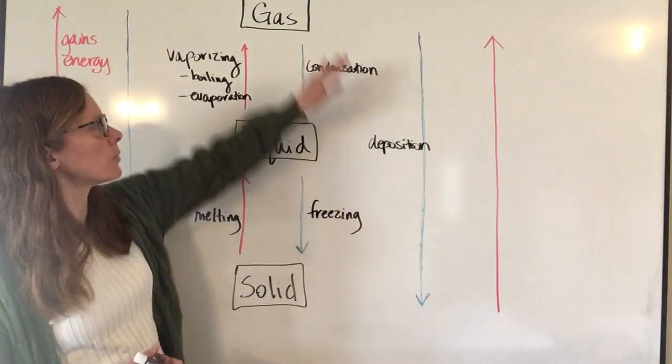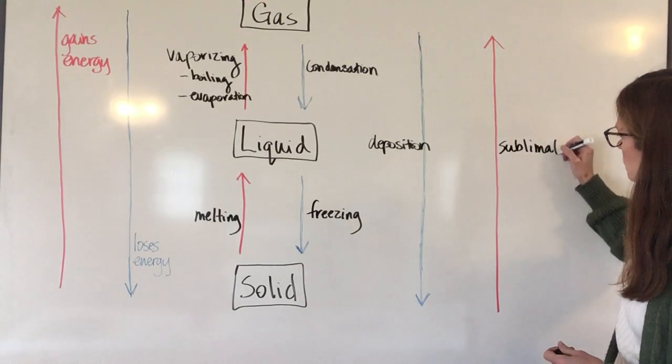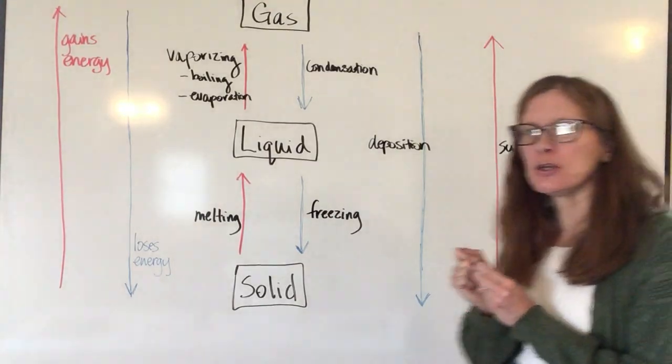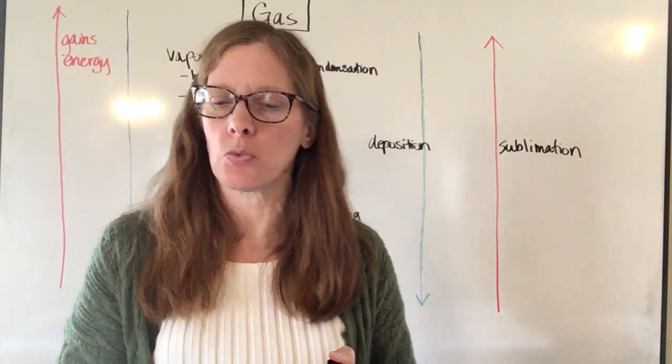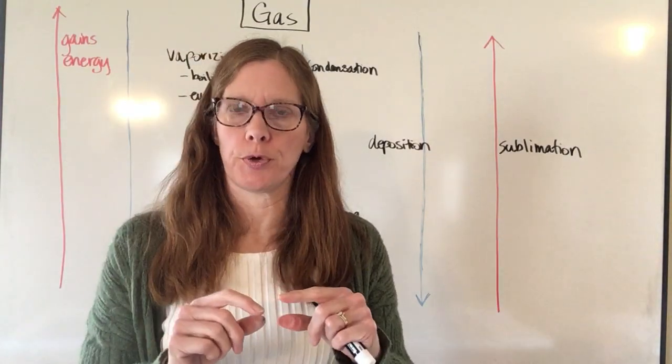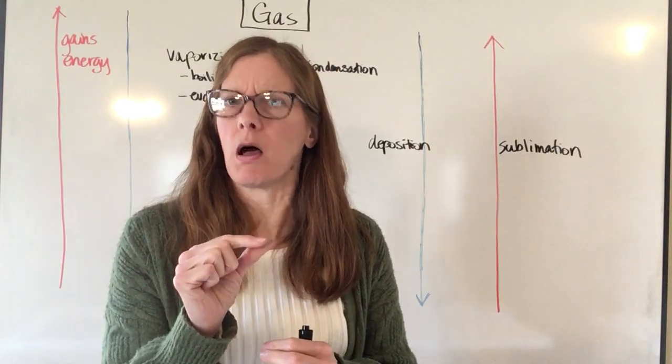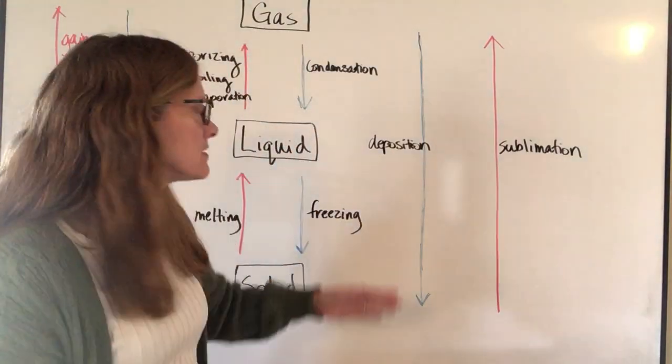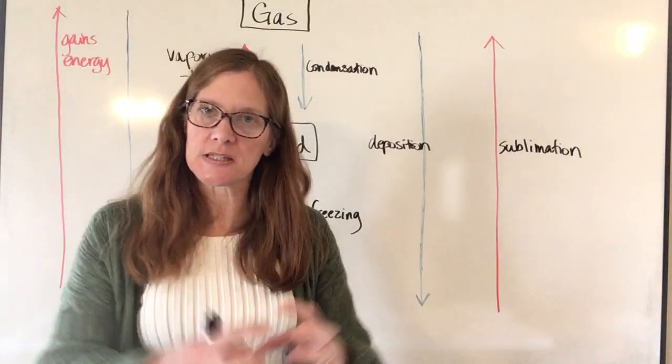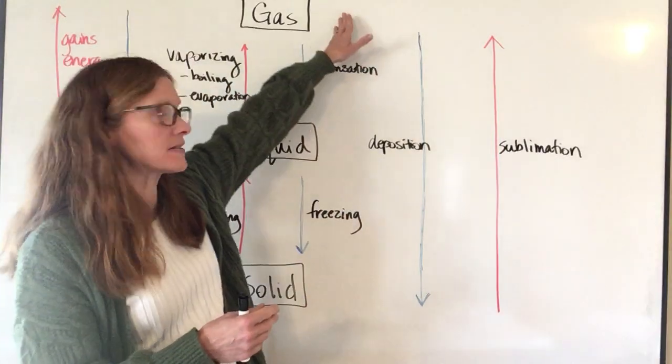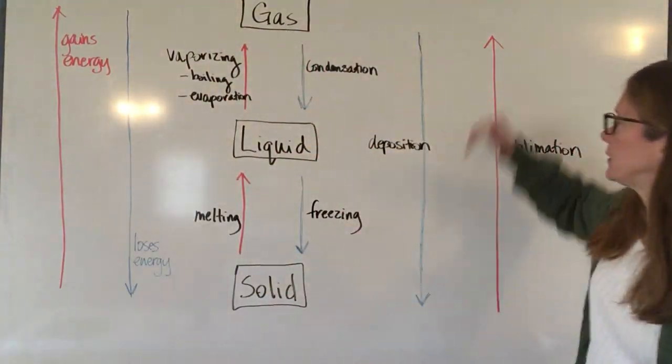You can also turn a solid directly into a gas and that process is called sublimation. And you probably have seen, not that you've seen it happen, but you probably have recognized this happening too, although you may not have known why. Have you ever had an ice cube that kind of falls way to the back of the freezer and then you find it later on and it's a whole lot smaller than all of your other ice cubes are? Well, that's because sublimation has taken place. That solid ice cube has actually decreased in size because some of the particles have turned into the gaseous state in the freezer, and so it decreases the size of the solid. So it goes directly from a solid to a gas.